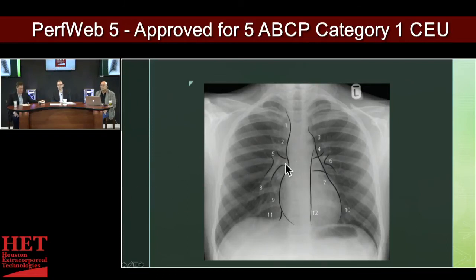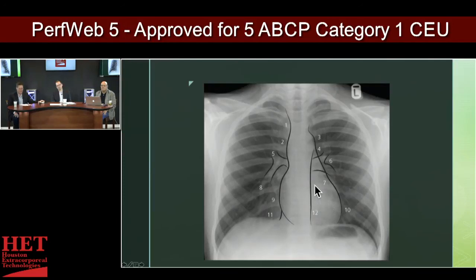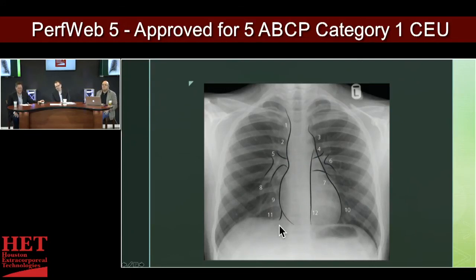Number two is the right atrium. We have the right ventricle, and we have the left ventricle — which is number nine. These are the pulmonary arteries coming off the heart. And the inferior vena cava.